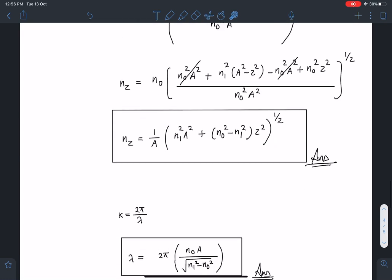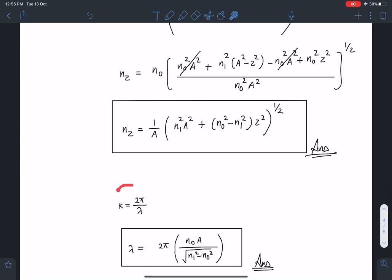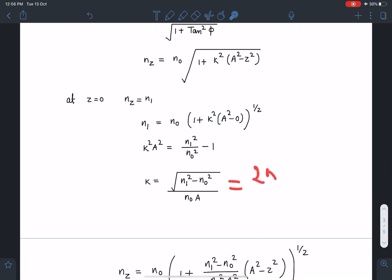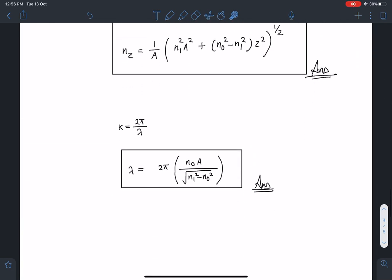After this, this k is 2 pi by lambda. So lambda value I can directly calculate from here. This value is actually 2 pi by lambda. So lambda value will become 2 pi n0 a divided by root of n1 square minus n0 square. This is going to be my answer for wavelength of such wave. So these are the final answers.